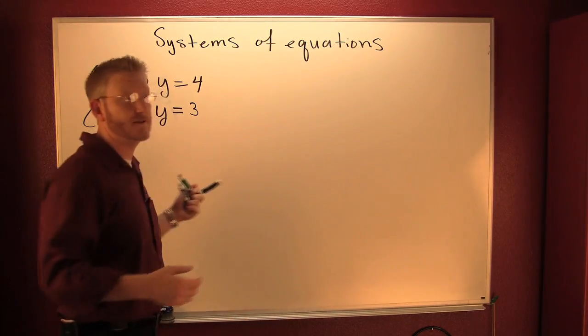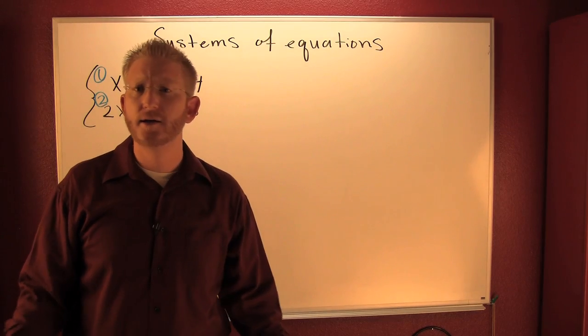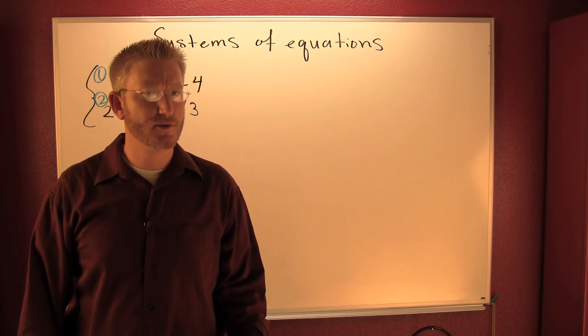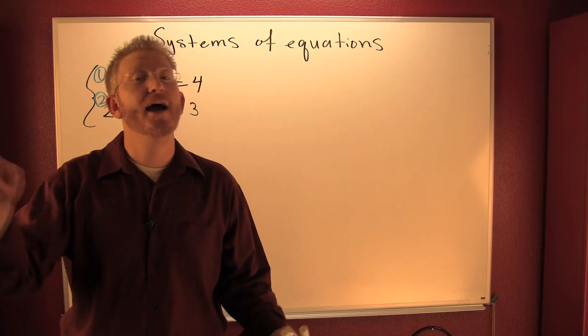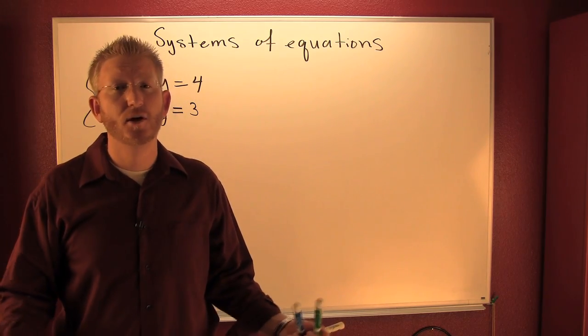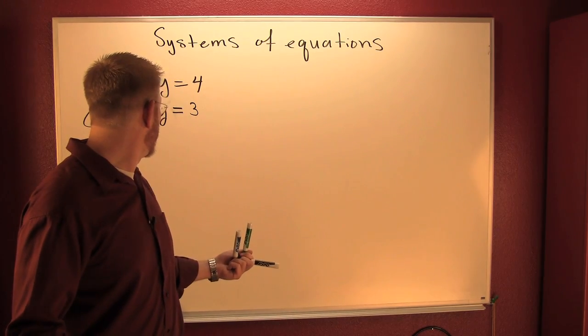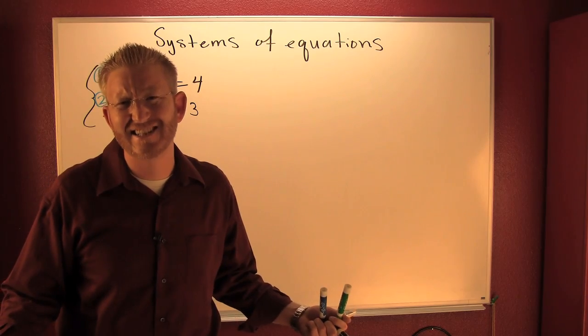If this is thing one and that's thing two, what we want to do is maybe we want to graph these guys. Why? Because we're looking for a solution to a system. A solution to a system is a point, and that's in the next set. What I want to do is I want to graph these two.